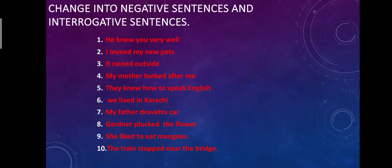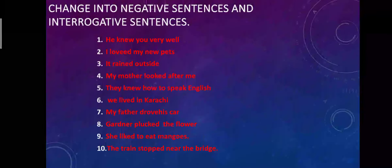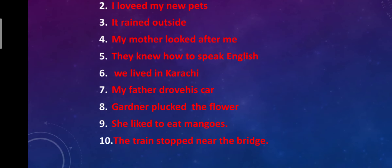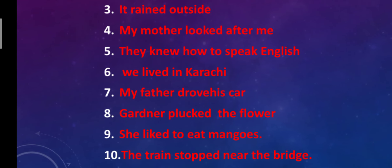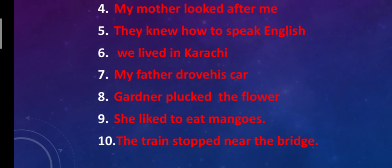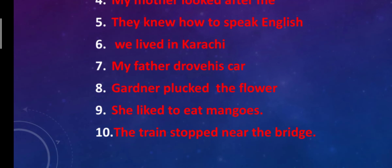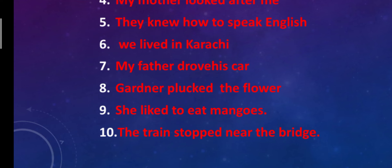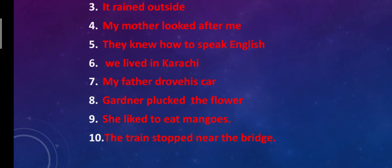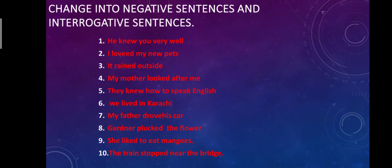Now change these sentences into negative and interrogative for practice. Practice is essential to get command over Past Indefinite Tense. Sentences: He knew you very well. I loved my new pets. It rained outside. My mother looked after me. They knew how to speak English. We lived in Karachi. My father dropped his car. The gardener plucked the flower. She liked to eat mangoes. The train stopped near the bridge. Change all into negative and interrogative sentences, and you can also send your answers in the comment box.